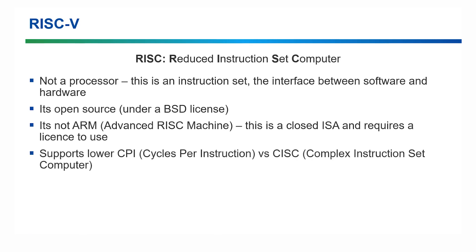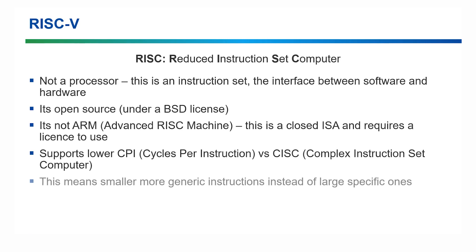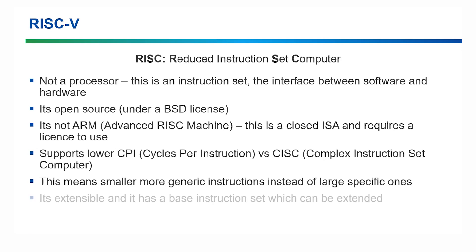RISC-V is efficient due to its support for lower cycles per instruction. So instead of long, specific and complex instructions being sent to the core that take ages to execute, it uses small, generic and simple instructions. It's also extensible with a base you can add to.